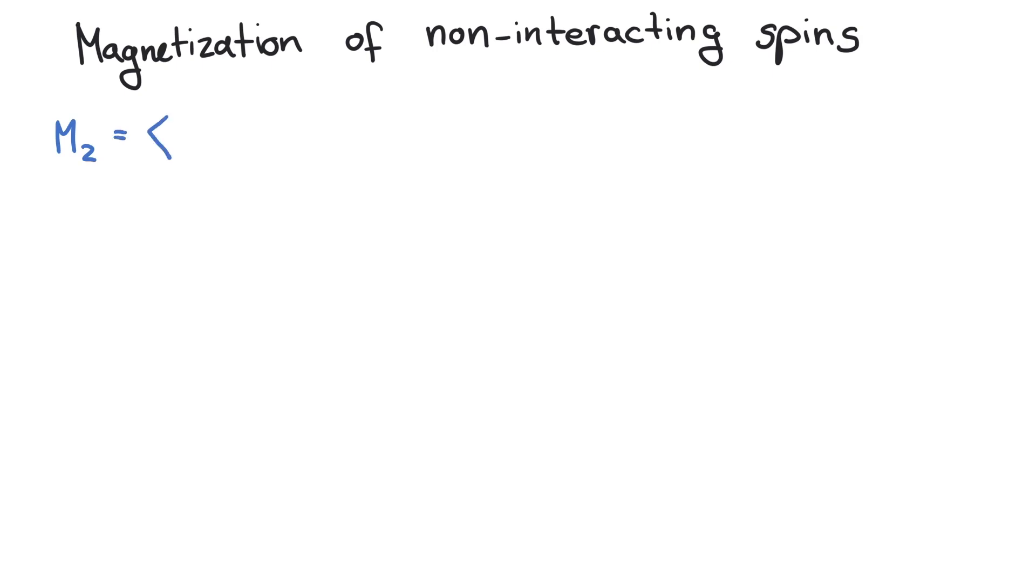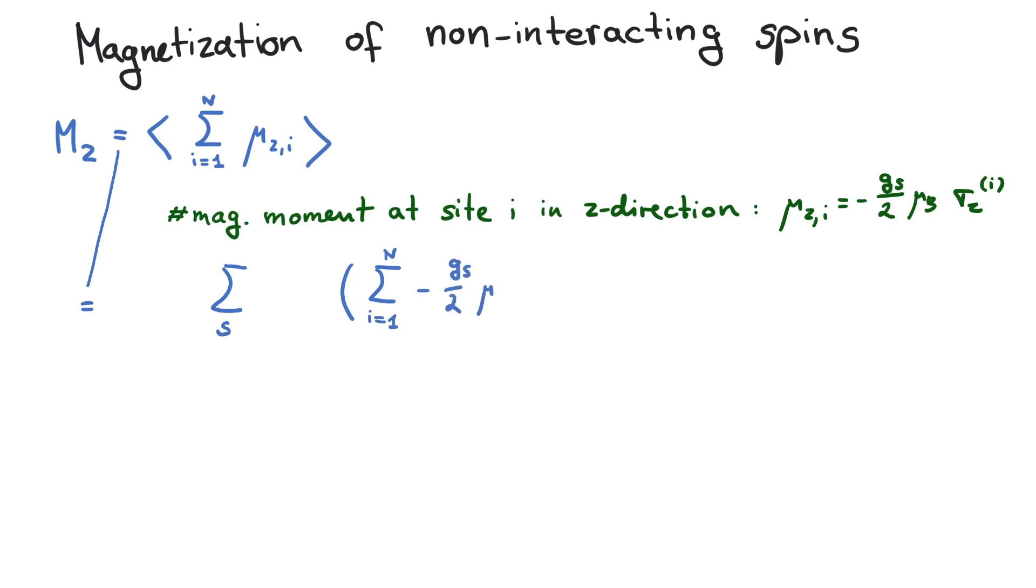To obtain the magnetization, that is the total magnetic moment, it is possible to take the thermal expectation value of the sum of all magnetic moments in the system. A thermal expectation is computed by summing over the observable in all possible configurations of the system.